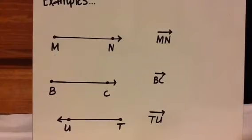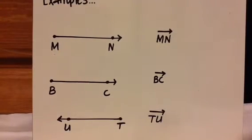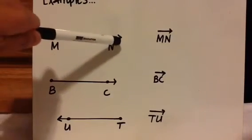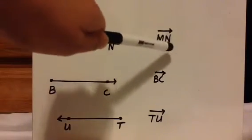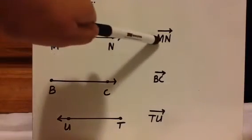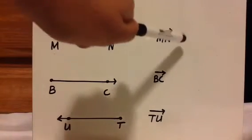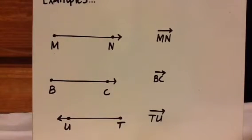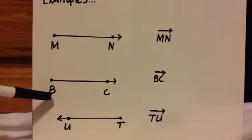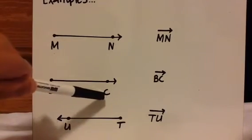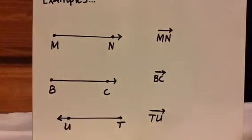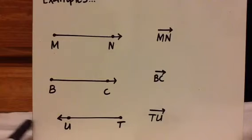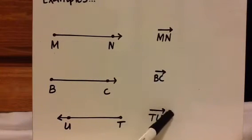Time for some examples. We know this is a ray because there's a point here and it's forever going on the other end, so you call it ray MN — the starting point comes first, then the never-ending part. Over here this is ray BC: B is the starting point, C is forever, so BC. Now notice this one — it starts at T and then forever goes the other way, so you would write ray TU and show the arrow going that direction.